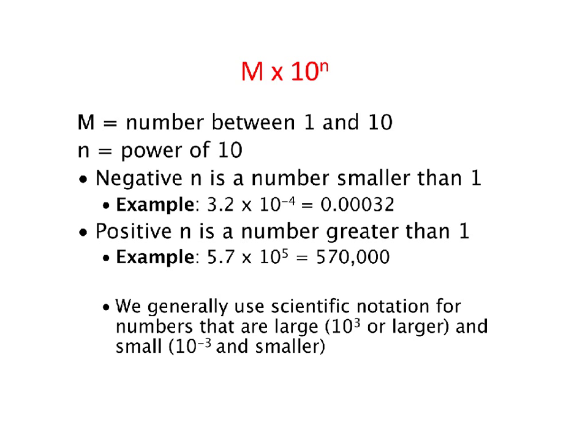In science, we typically use the scientific notation when we're dealing with numbers that are very large, which are 10 to the third or larger, and numbers that are very small, which are 10 to the negative third or smaller than that.